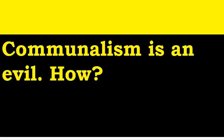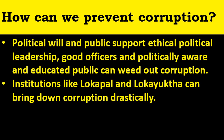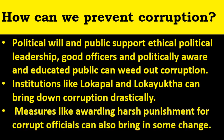Communalism is an evil — how? How can we prevent corruption? Political will and public support, ethical political leadership, good officers, and a politically aware and educated public can weed out corruption. Institutions like Lokapal and Lokayukta can bring down corruption drastically. Measures like awarding harsh punishment for corrupt officials can also bring some changes.